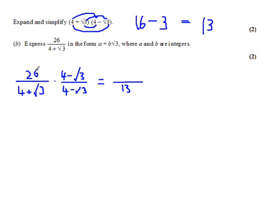And the top becomes 26 times 4, which is 104, 26 times minus root 3, which is minus 26 root 3. Now it might be tempting to leave the answer like this, but of course we've got to leave it in this form, where A and B are whole numbers. So we need to split this up.